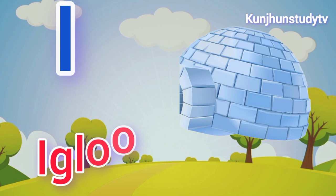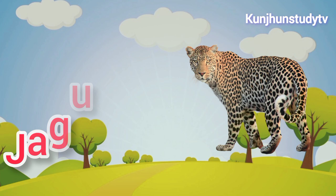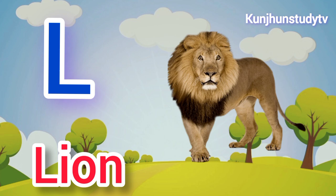I, I for igloo. J, J for jaguar. K, K for king. L, L for lion.